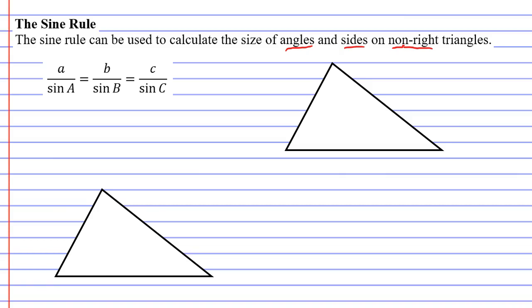You'll notice when you look at our formula here, we've got some capital letters, a, b, and c, and some lowercase letters, little a, little b, and little c. The capital letters represent the angles. So we'll write that down. Capitals represent angles, and the lowercase letters represent sides.